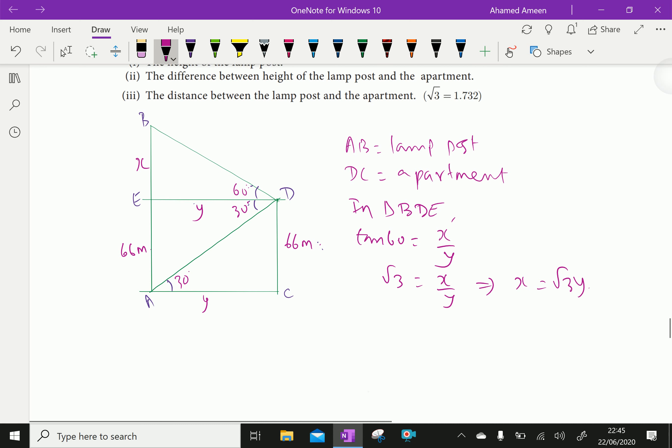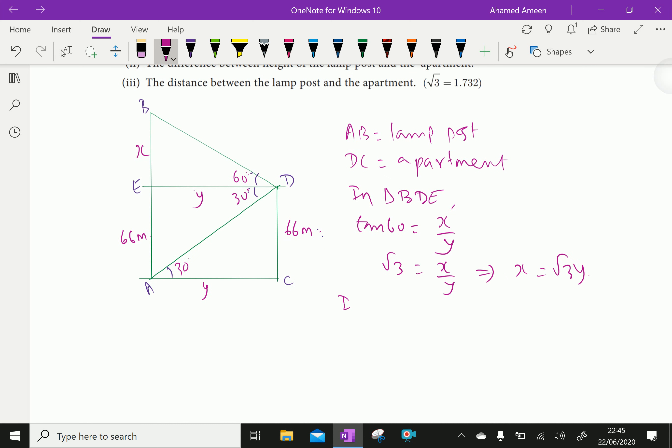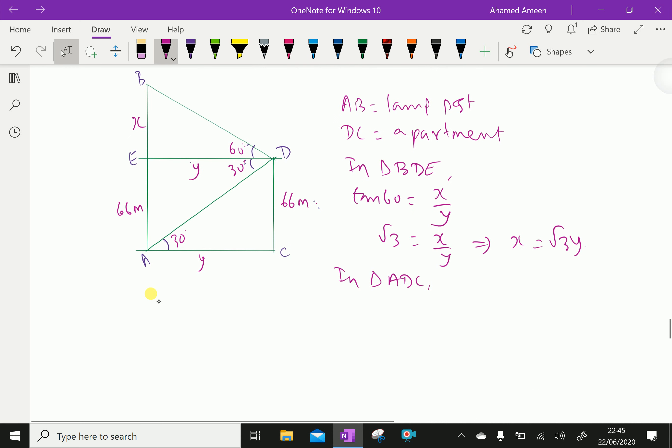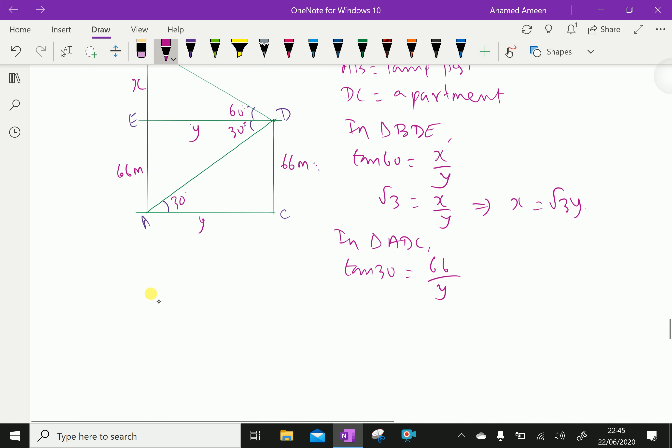Now in triangle ADC, tan 30 equals 66 over Y. Now tan 30 is 1 over root 3, which equals 66 over Y. This gives Y equals 66 root 3.